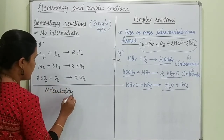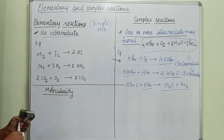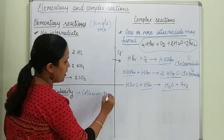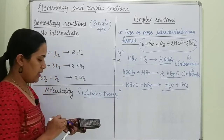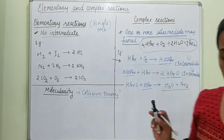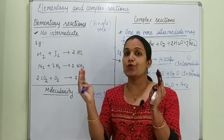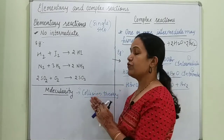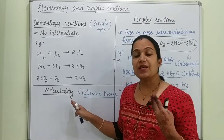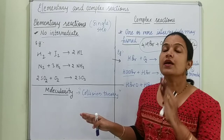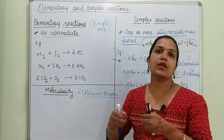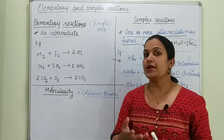Now we will study molecularity. When studying molecularity, you must also know collision theory. Collision theory states that whenever a chemical reaction occurs, two molecules must be close to each other and must collide with one another. When they collide effectively, the product is obtained. According to collision theory, we can find out molecularity of a reaction when molecules are colliding with each other to form an effective product.